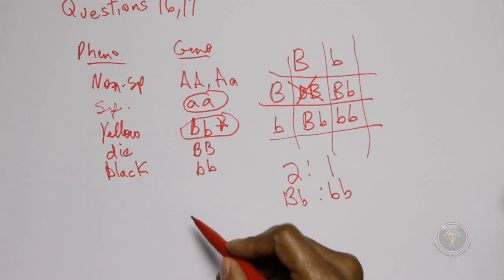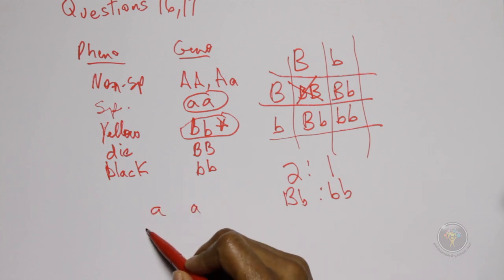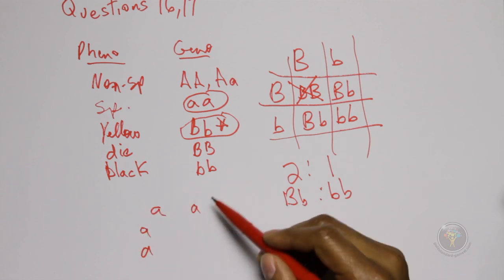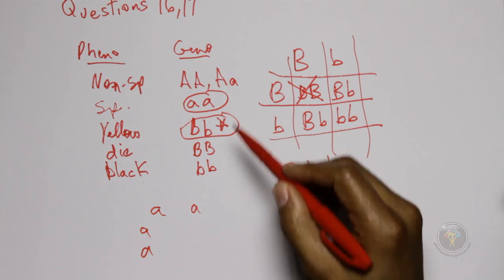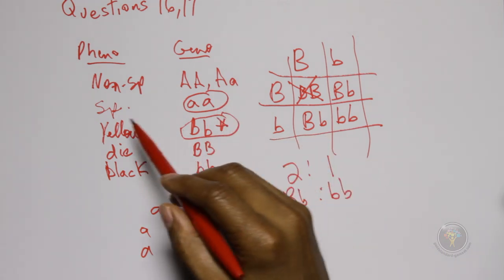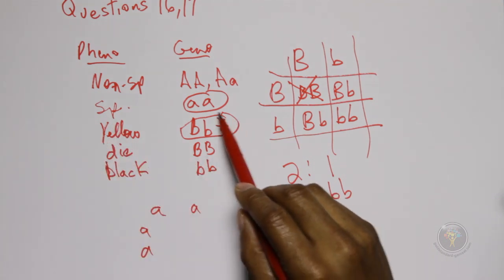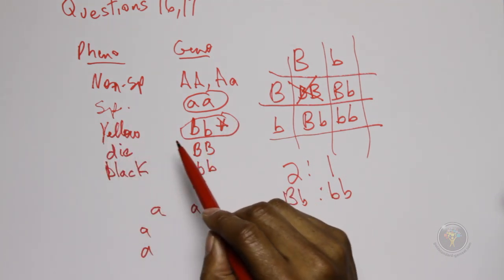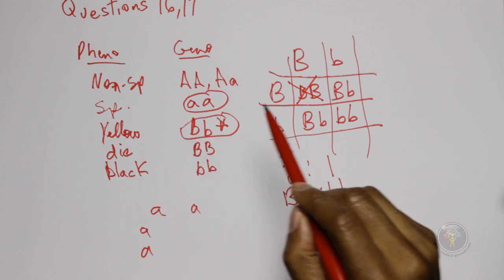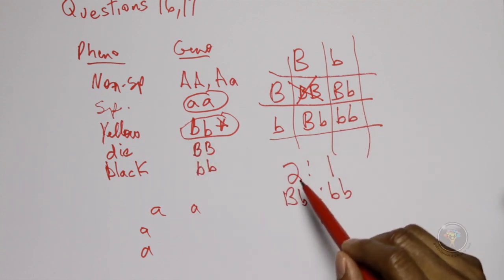So if we know aa will only produce offspring that are aa, because that's like doing aa versus aa. So if you do this, you only get offspring that are going to be small a small a, so they will all be spotted. So we only have to look at the ratio of the yellow and see what they would produce.